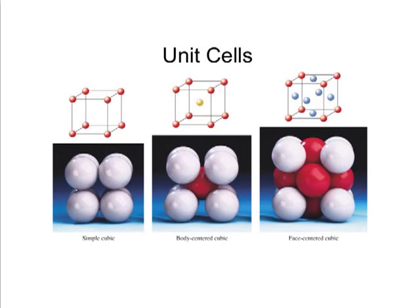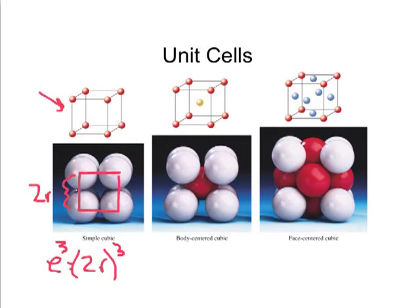Where do the atoms touch in a simple cubic unit cell? You can't really talk about where things touch by looking at the ball-and-stick diagram because it's an oversimplification. But in the space-filling model, you can clearly see that the atoms are touching along the edges. The edge length in terms of atomic radii is one radius plus one radius, so that edge length equals 2r. The volume of the cube is the edge length cubed, so you can figure out the volume in terms of atomic radii.